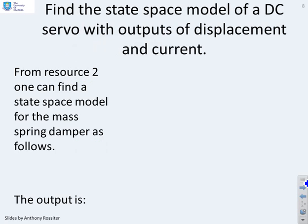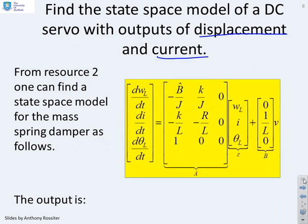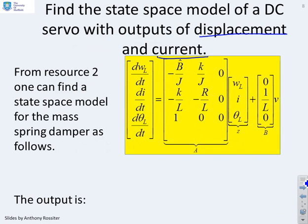Different example. This one uses the DC servo, which again was discussed in video 2. So what it says is find state-space model with outputs of displacement and current. Now first of all, let's remind ourselves of the underlying model. So here I've used the model which has got three states in it. You'll see I've got the angular velocity of the load, I've got the current, and the angular displacement of the load. So I've got three different states.